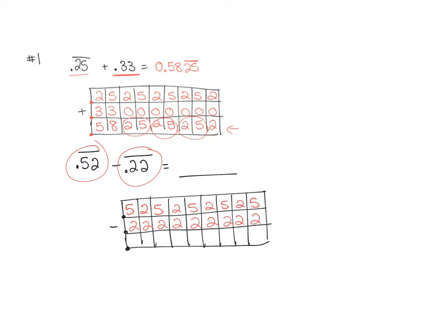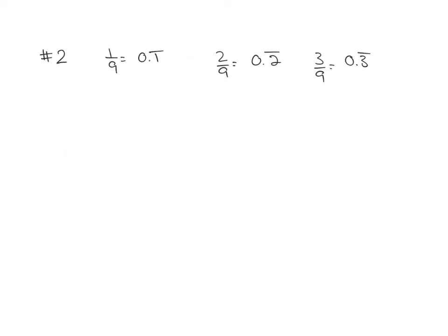So 5 minus 2 is 3, 2 minus 2 is 0, 5 minus 2 is 3, and this pattern continues — the grouping that repeats is 30, so my answer would be 0.30 with the 3 and 0 repeating. As we learned yesterday, 1 ninth is 0.1 repeating, 2 ninths is 0.2 repeating, 3 ninths is 0.3 repeating, and the pattern continues.